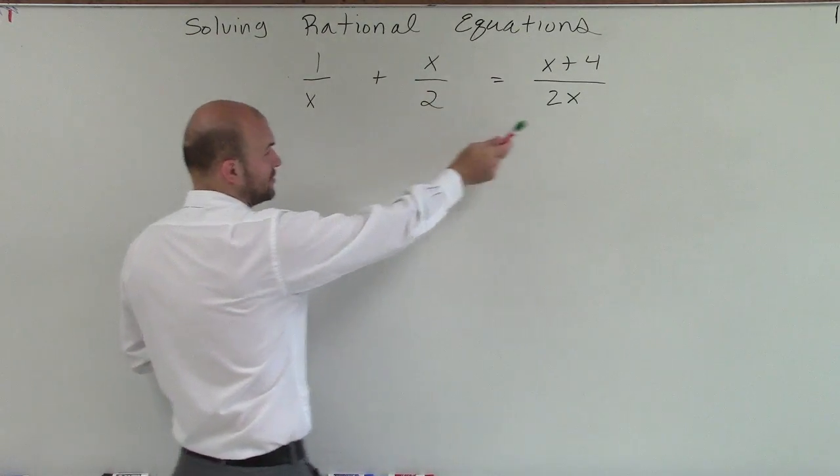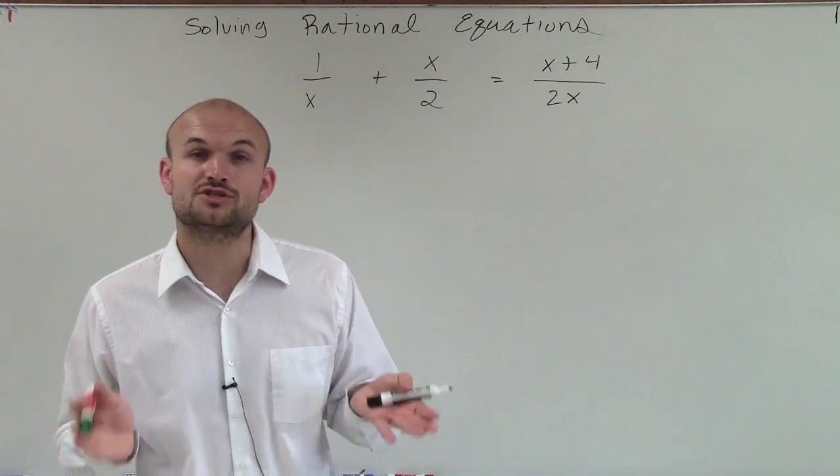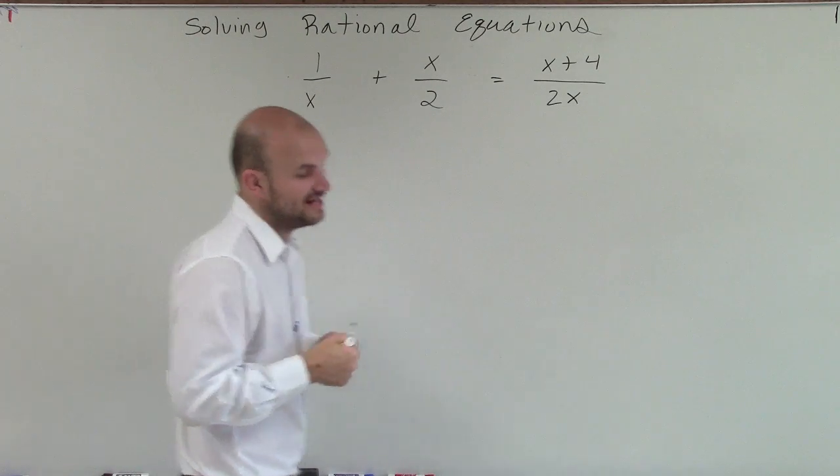So I look up here, I have an x, a 2, and a 2x. So what I need to do is determine what is the smallest term that each and every one of those values divide into.